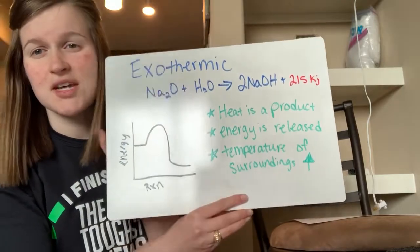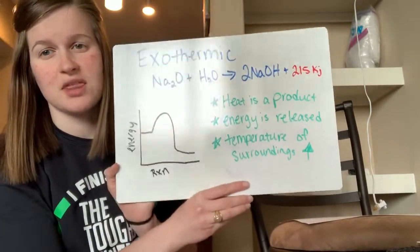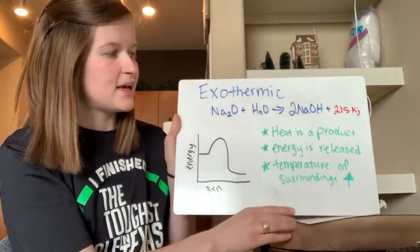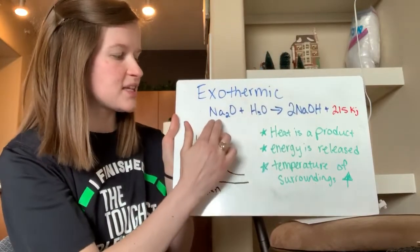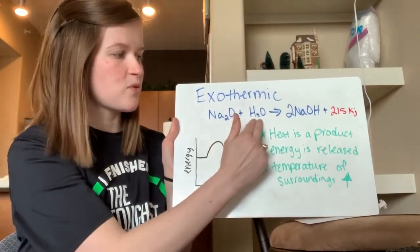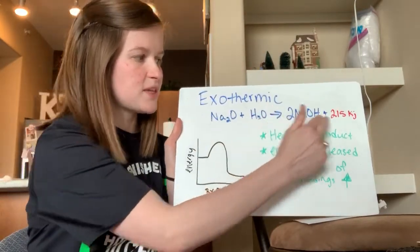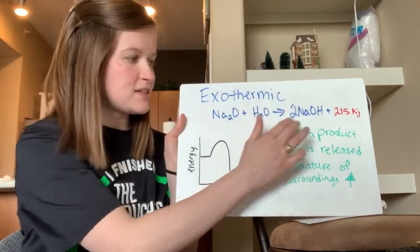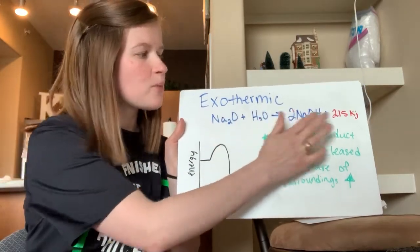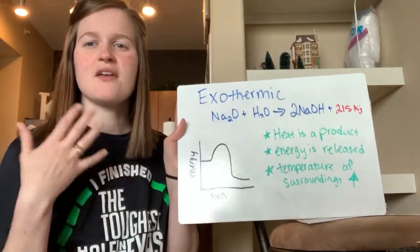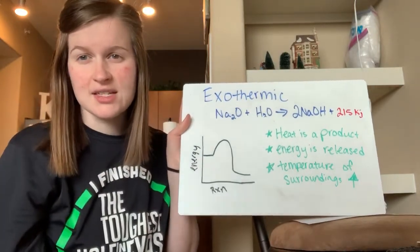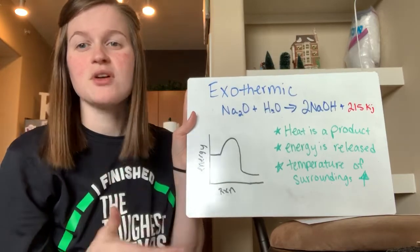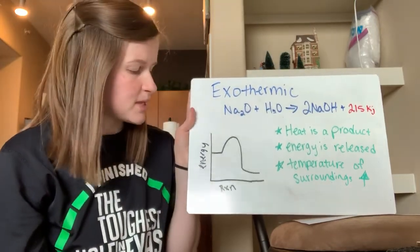We can also do stoichiometry calculations with this, because the equation is saying: as this reaction takes place, with one mole of this and one mole of this and two moles of this, this is how much energy you're going to get out. If you had two moles of the reactants, that would create four moles of product and twice as much energy. So you can think of heat like another product and treat it as such whenever you're doing stoichiometry problems.